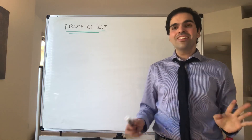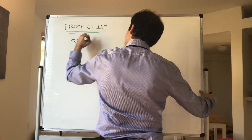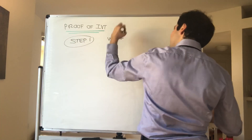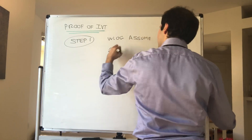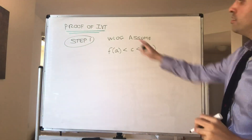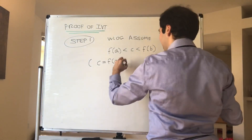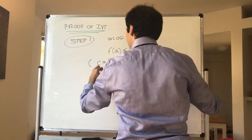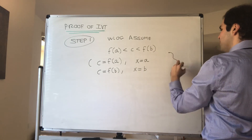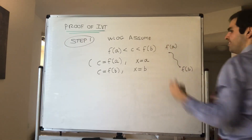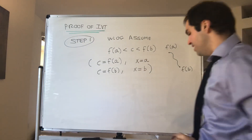Now let me prove the Intermediate Value Theorem — the proof is absolutely amazing. Step one: without loss of generality, we can assume c is strictly between f of a and f of b. Because if c equals f of a, we're done — just choose x equals a. If c equals f of b, choose x equals b. And if f of b is less than f of a, either repeat the proof or just consider minus f, and that will also work. So it's not a big loss of generality to assume this order.